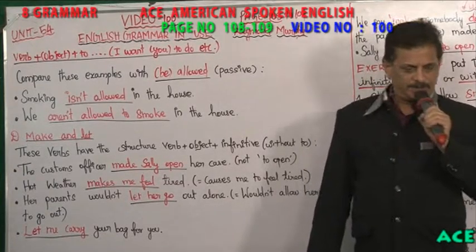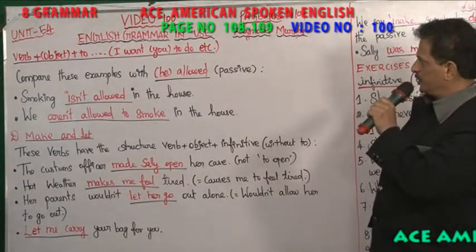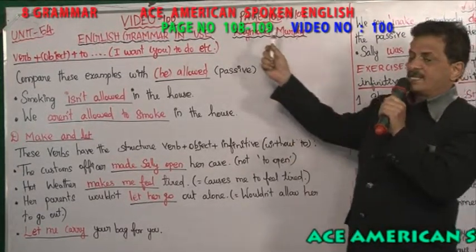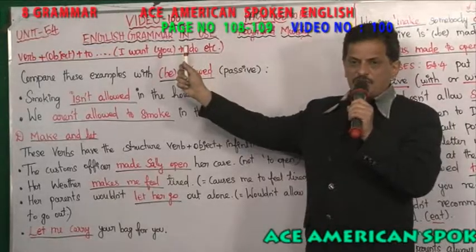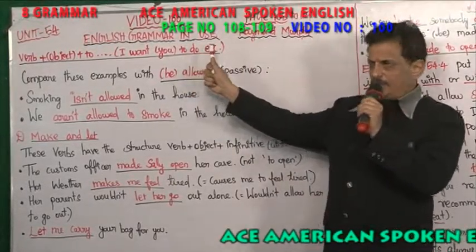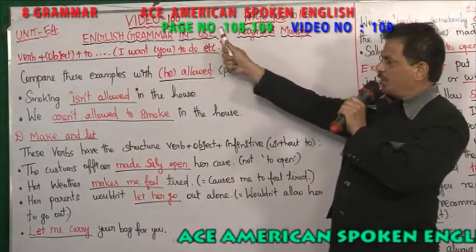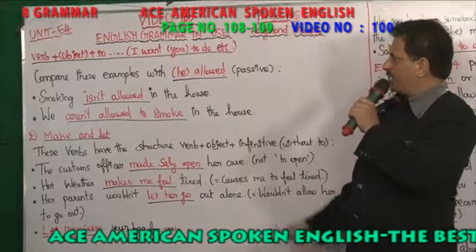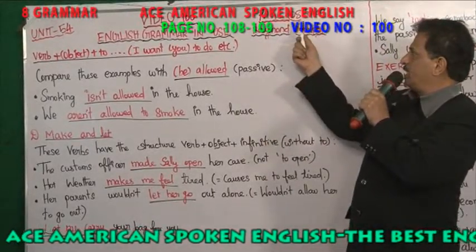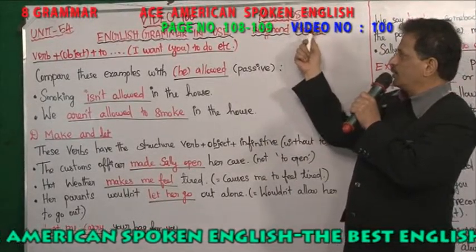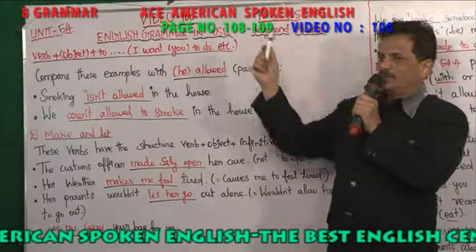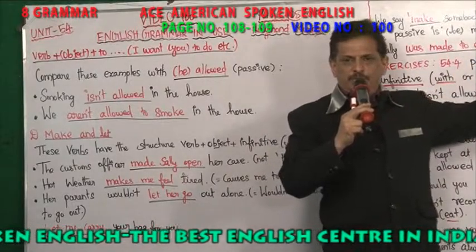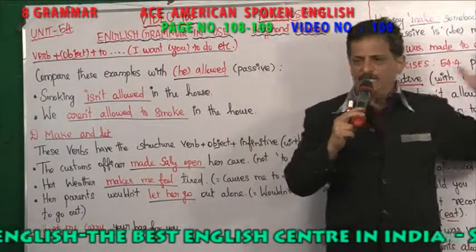Hey friends, welcome to ASM American English Center. Raymond Murphy's English Grammar. We have come here to video number 100. It's page number 108 to 109, unit number 54. It is the Cambridge University Press.